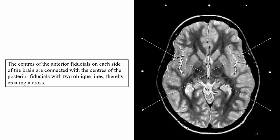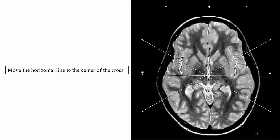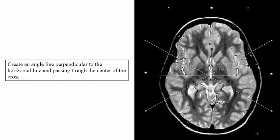The centers of the anterior fiducials on each side of the brain are connected with the centers of the posterior fiducials with two oblique lines, thereby creating a cross. The fiducials in the middle are connected with a horizontal line. We move the horizontal line to the center of the cross. We create an angle line perpendicular to the horizontal line and passing through the center of the cross.